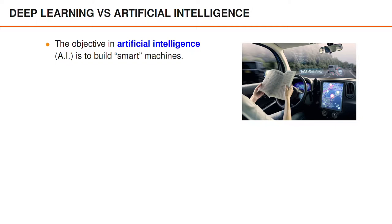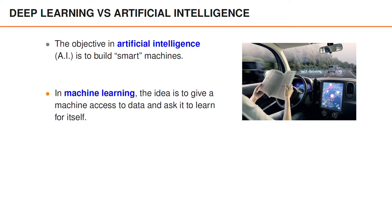The objective in artificial intelligence is to build smart machines. Some also describe it as the effort to automate intellectual tasks normally performed by humans. These tasks could involve solving problems, having a conversation, or driving a car. In many cases, these examples consist of pairs of input and output data, where the input data represent the situation and the output data describe a suitable solution.